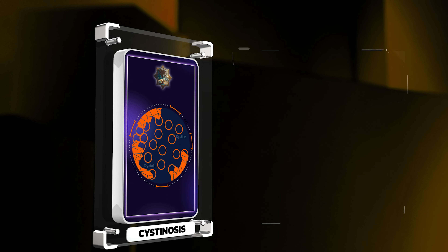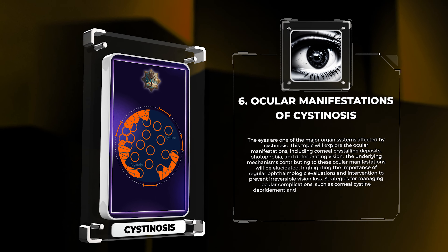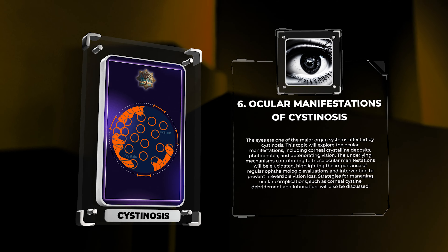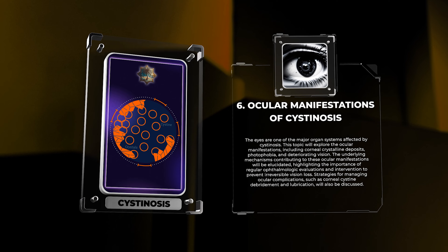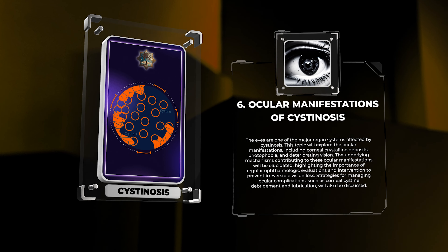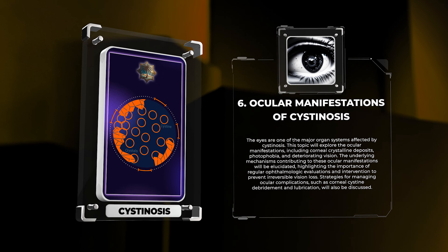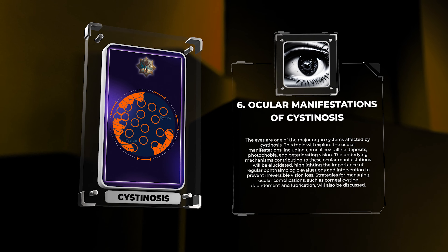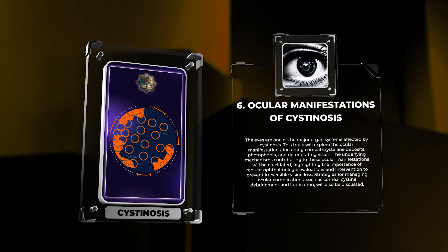The eyes are one of the major organ systems affected by Cystenosis. This topic will explore the ocular manifestations, including corneal crystalline deposits, photophobia, and deteriorating vision. The underlying mechanisms contributing to these ocular manifestations will be elucidated, highlighting the importance of regular ophthalmologic evaluations and intervention to prevent irreversible vision loss. Strategies for managing ocular complications, such as corneal cysteine debridement and lubrication, will also be discussed.